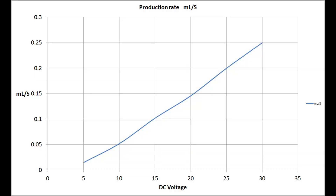This first graph is headed 'Production Rate' and that's in millilitres per second — so that's the volume of gas being produced by the cell. I've carried out a series of trials at 5, 10, 15, 20, 25, and 30 volts, and that's the same on each of the graphs you'll be seeing. That's on the X axis, which is the horizontal one that goes from left to right at the bottom.